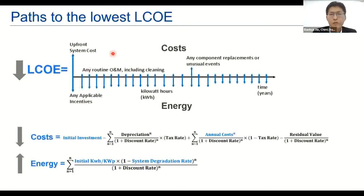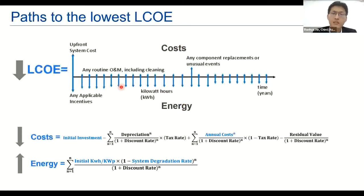I think everyone's familiar with the LCOE. There are two parts: one is the cost and the other is energy. That's over a very long period — at least 25 years, and some are 30 years for double glass.